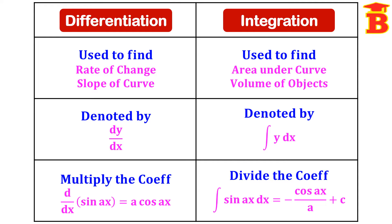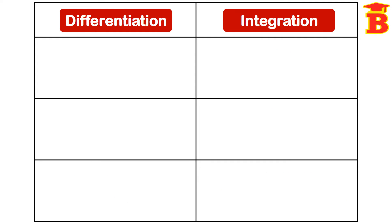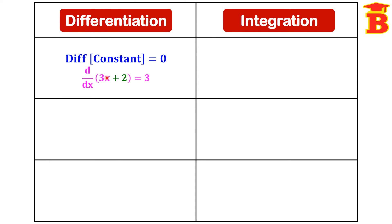These are the three important and basic differences between differentiation and integration. In problems, we have some other differences. In differentiation, we don't add a constant at the end, because the differentiation of a constant is 0. For example, d/dx of (3x + 2): the differentiation of x is 1, so 3 times 1 is 3, and the constant differentiation is 0. The result is simply 3.